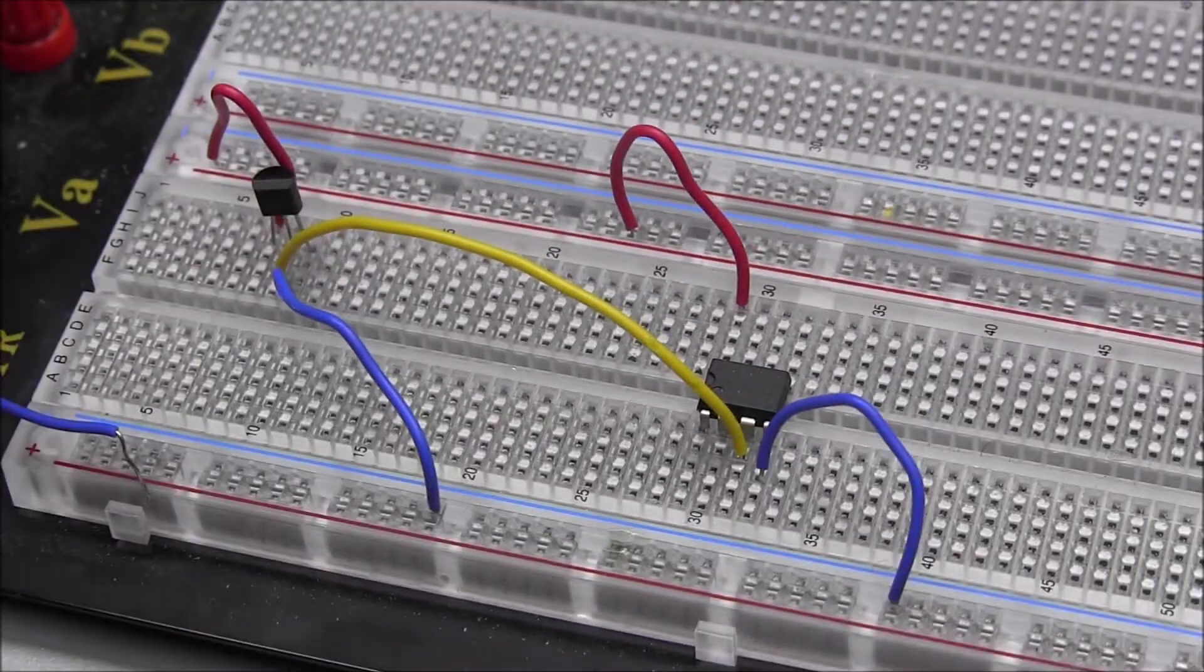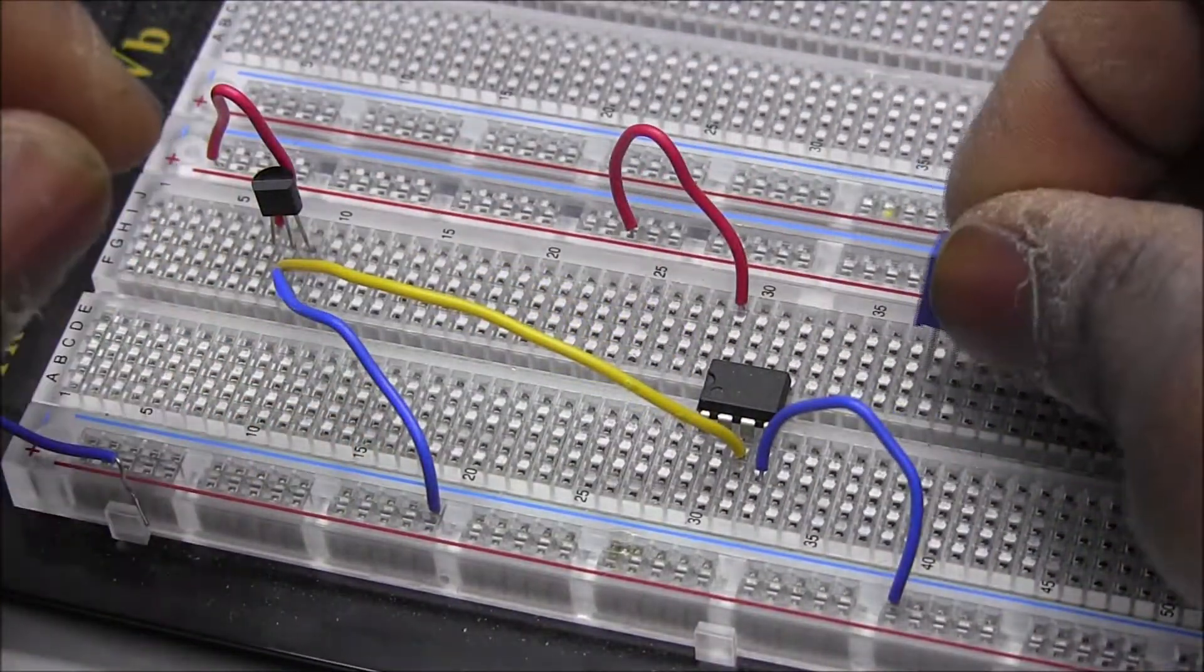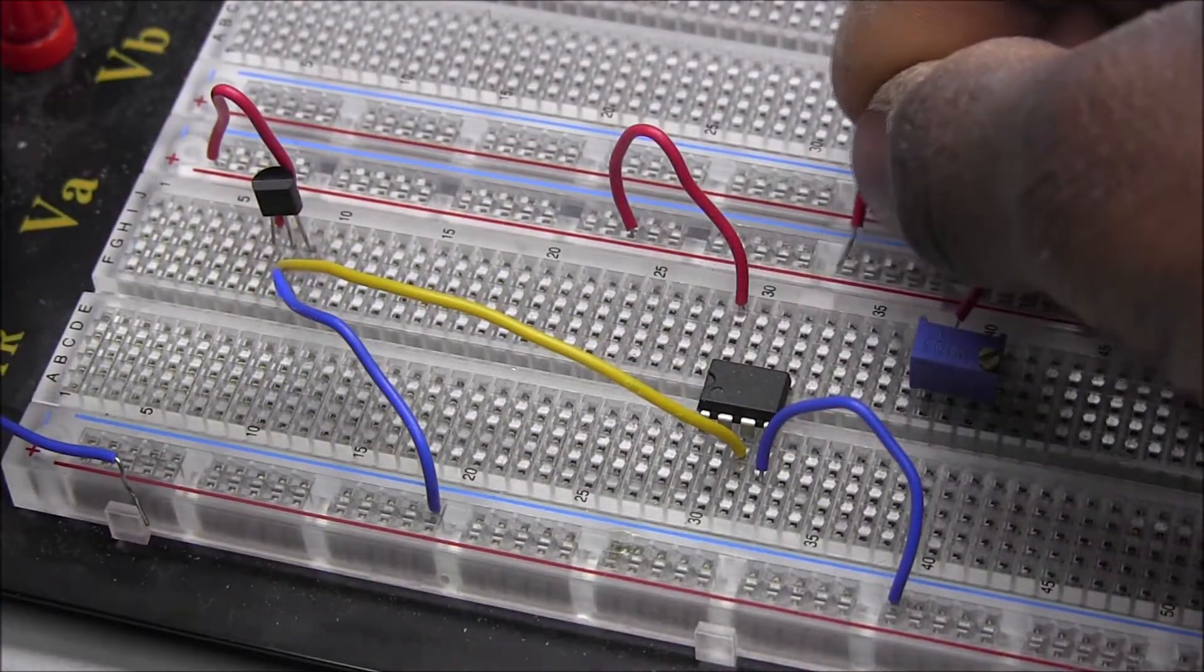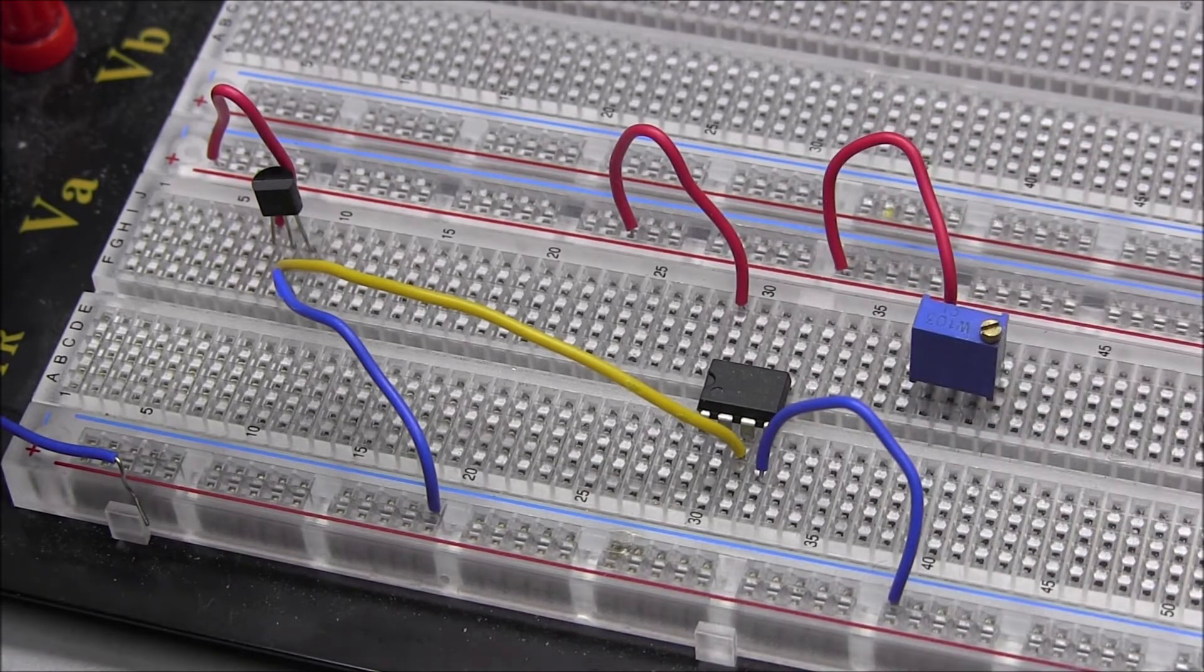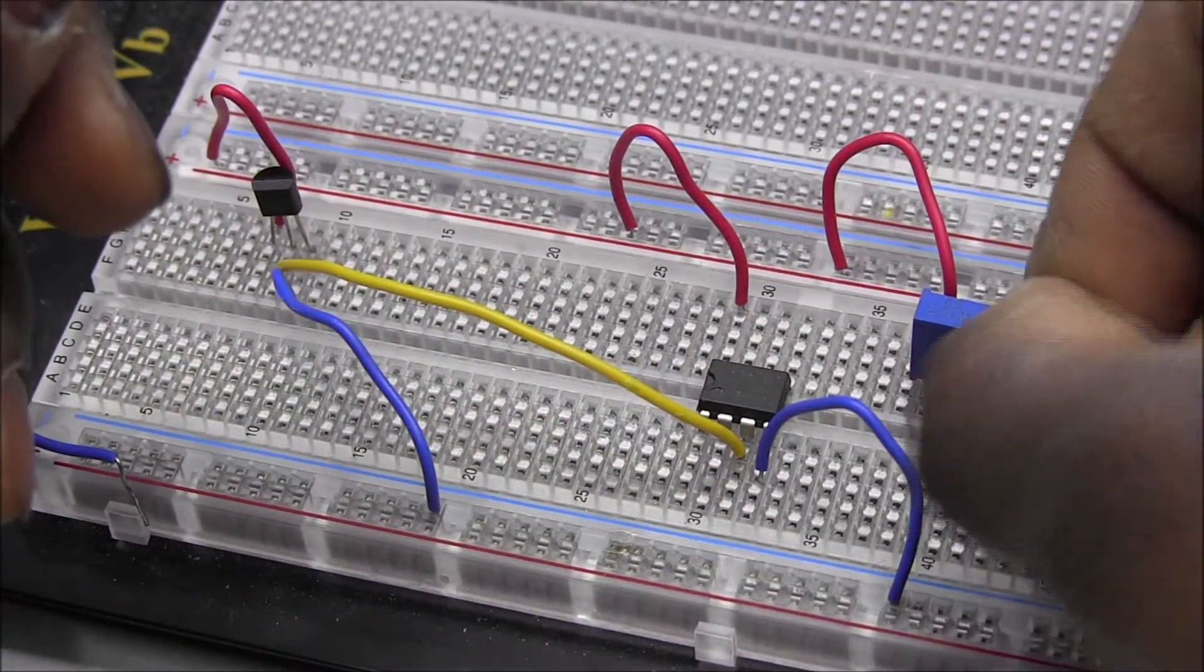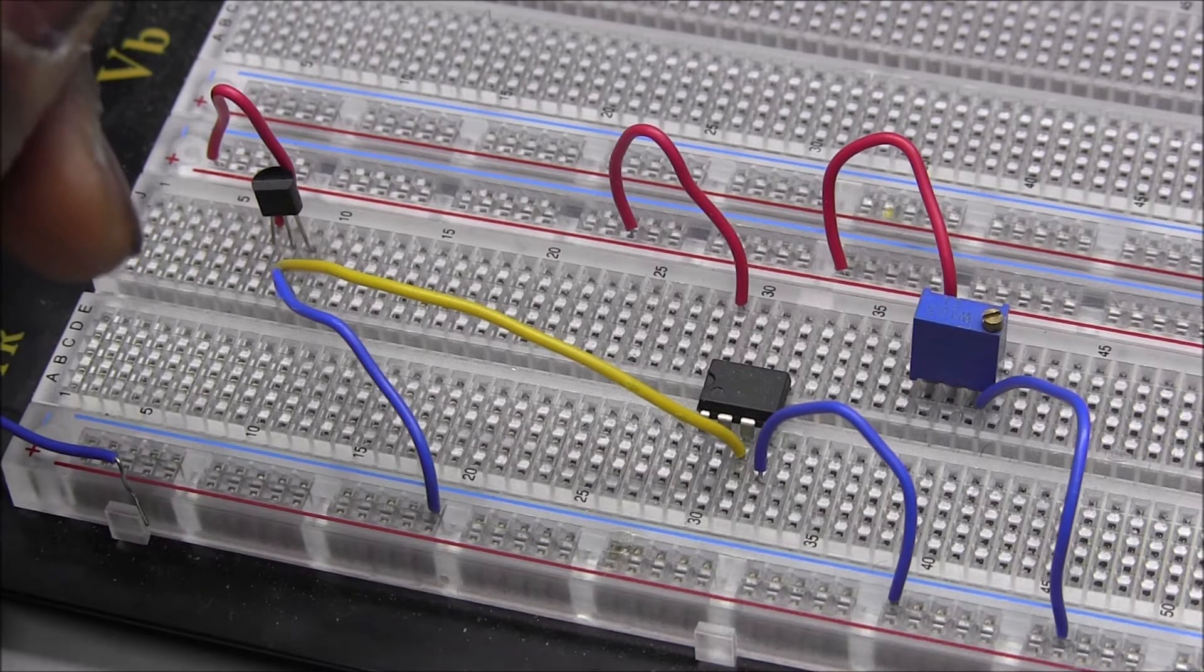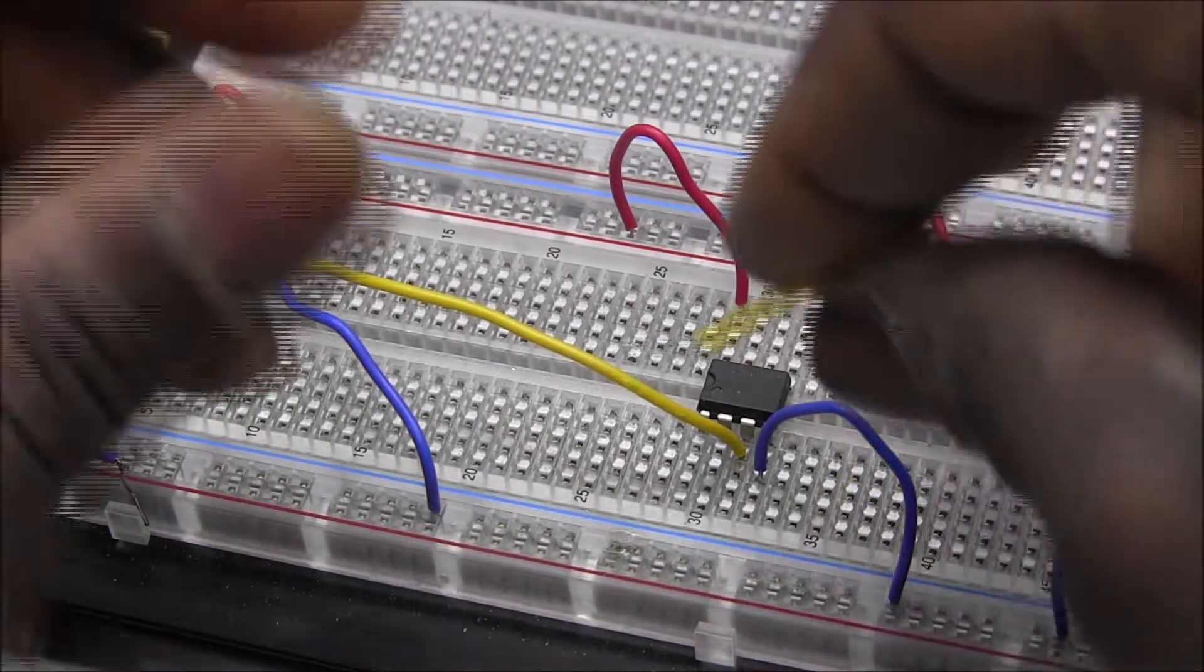Okay, the potentiometer, I'm gonna put right here. So one side of the potentiometer connects with the power rail to the positive side. Okay, the other side negative. Okay, the center pin of the wiper, this goes to pin 2.